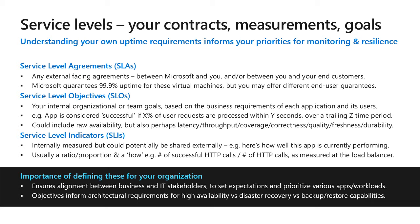Service-level indicators are a measure that can be potentially shared externally — how the app is currently performing, like a dashboard item. If your users are asking how successful your application is in terms of response time and performance, SLIs are your answer. It is important to define SLAs, SLOs, and SLIs for your organizations because it ensures alignment between business and IT stakeholders and solidifies your commitment to users in terms of application performance.